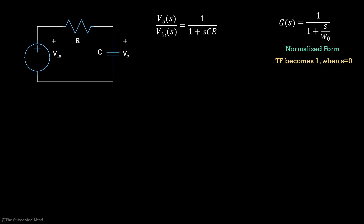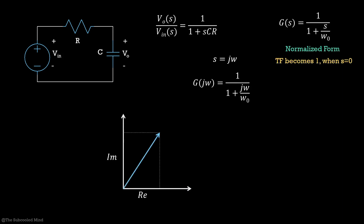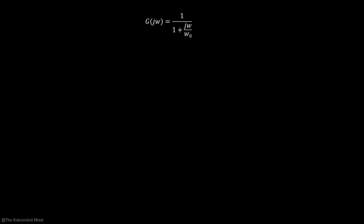Now we will substitute s equal to jω and find the gain and phase of this complex number. For any complex number, we can find the magnitude or gain by taking the square root of the real part squared plus the imaginary part squared, and calculate the phase by taking the arctangent of the imaginary part divided by the real part. But solving G(jω) is not that straightforward since it is not in simple real plus imaginary form.